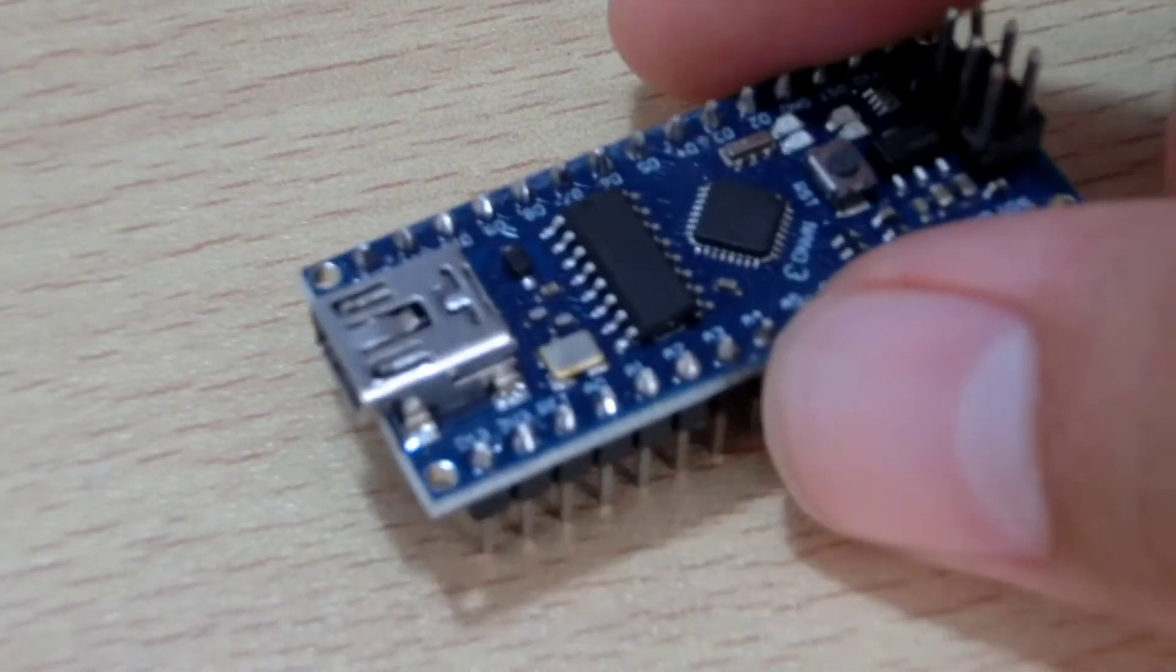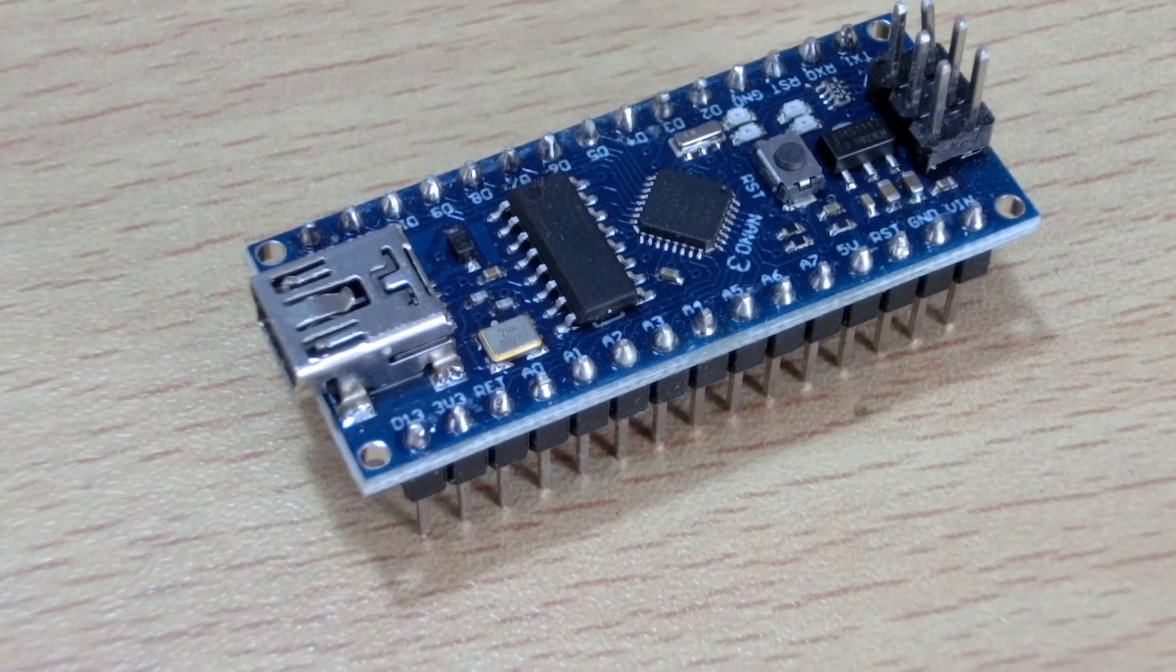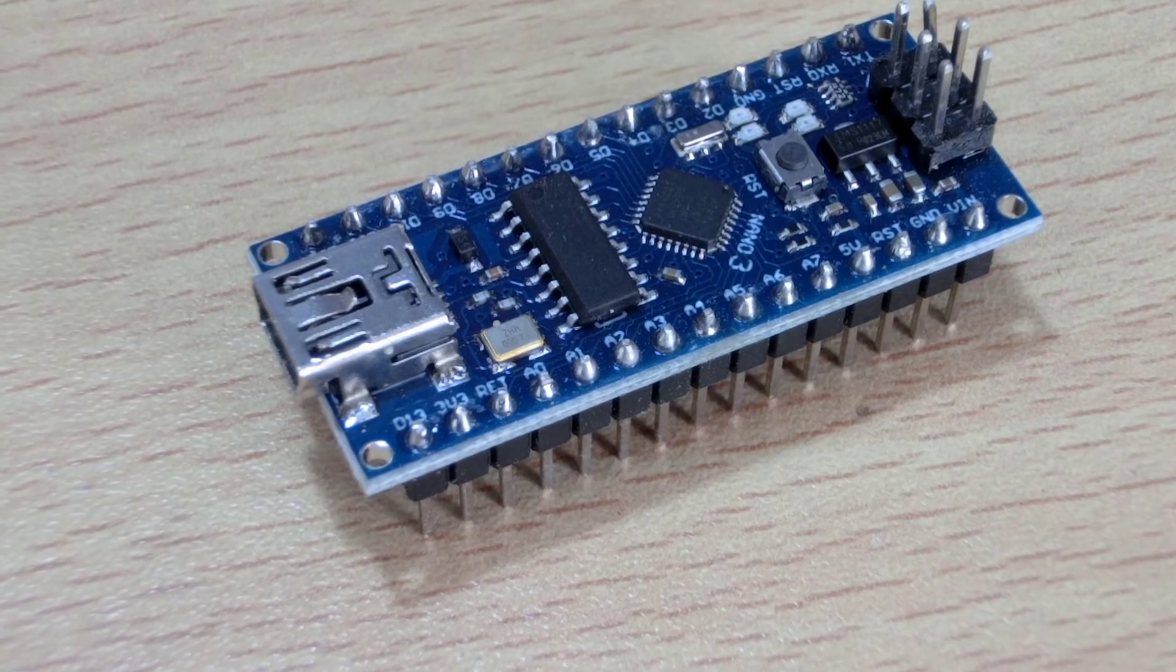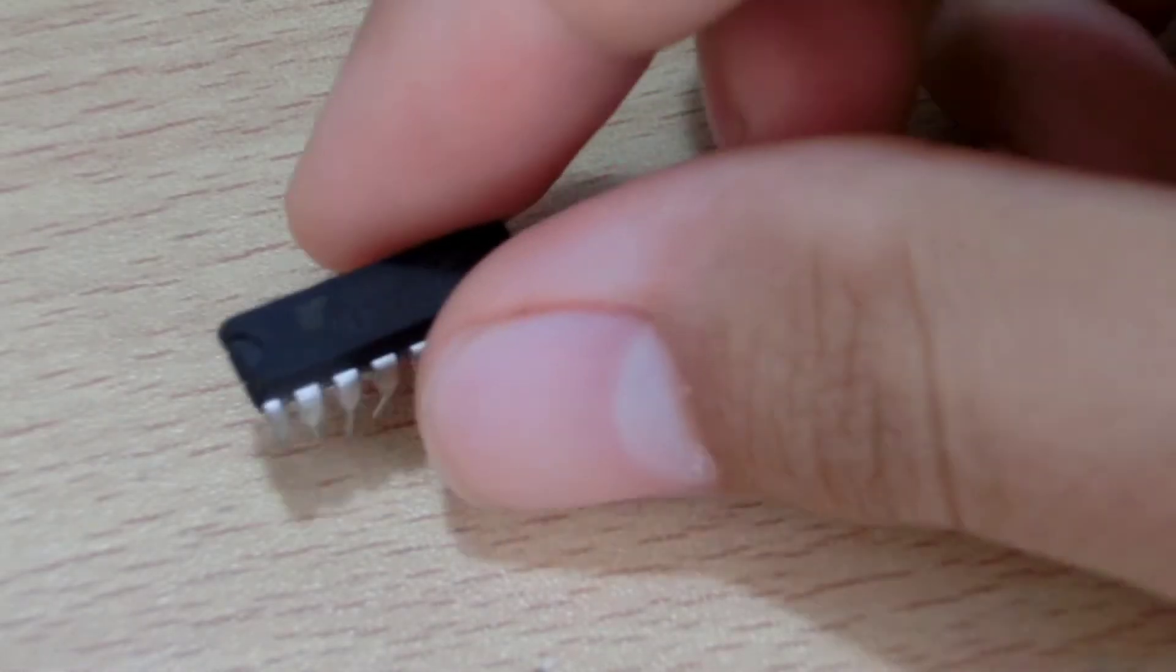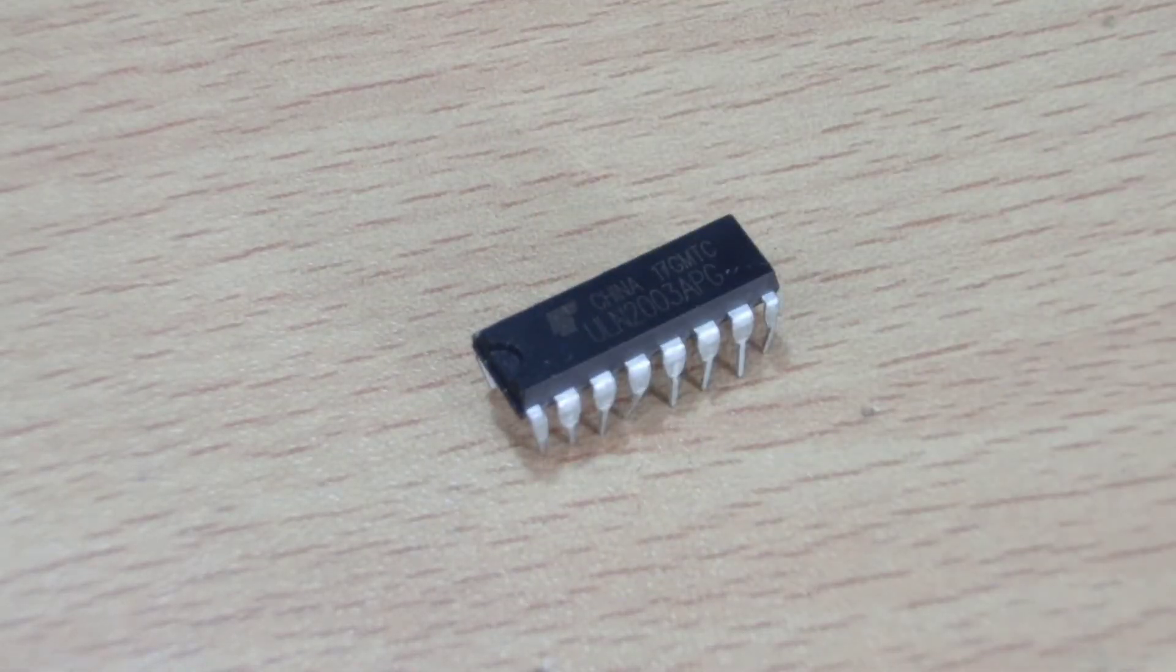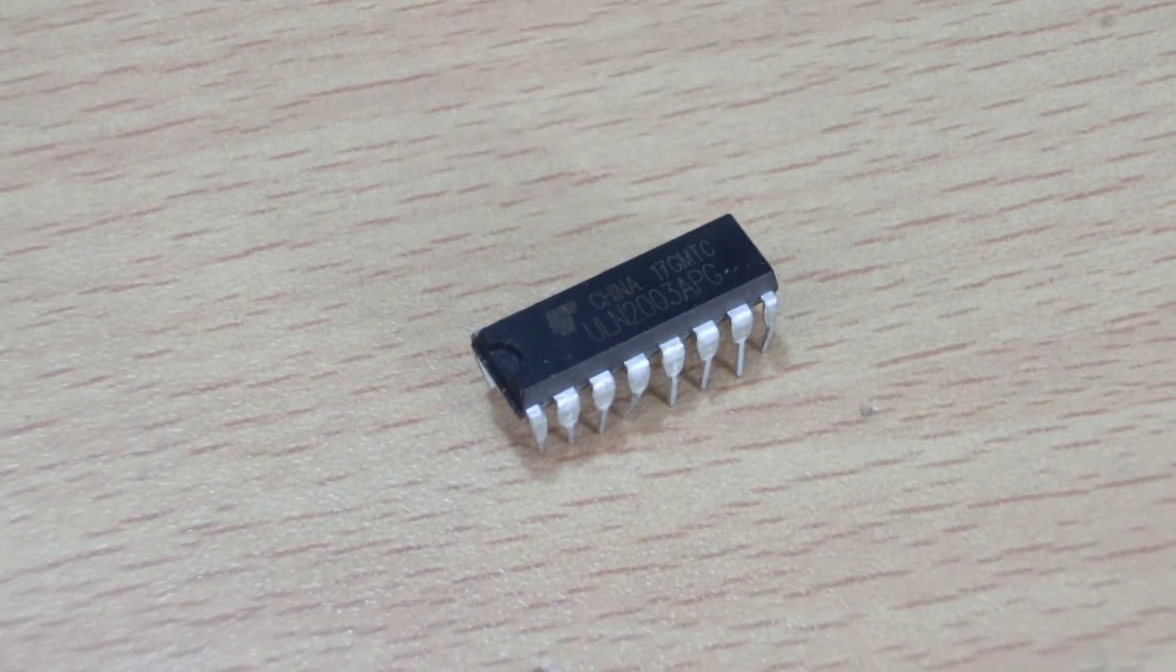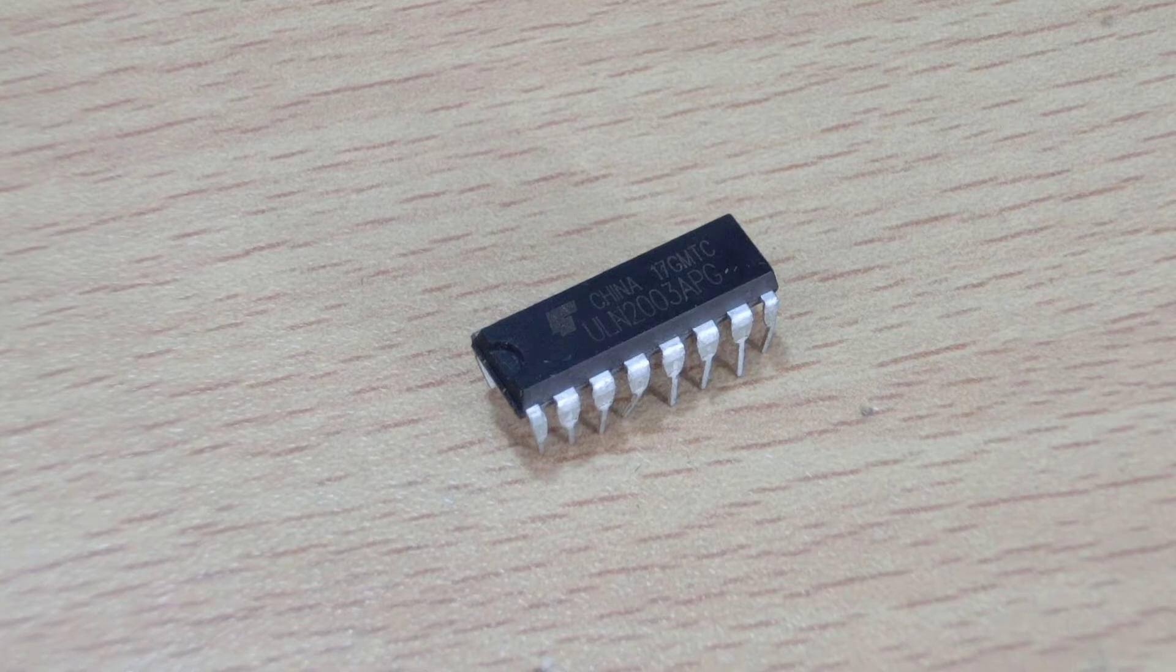Obviously, we cannot manually apply voltages to the coils. For this we need a microcontroller like an Arduino which can apply voltage to the coils in the right order. The Arduino pins cannot handle high current so we need to use transistors. But to avoid using multiple transistors we will use the ULN-2003A IC. According to Wikipedia...